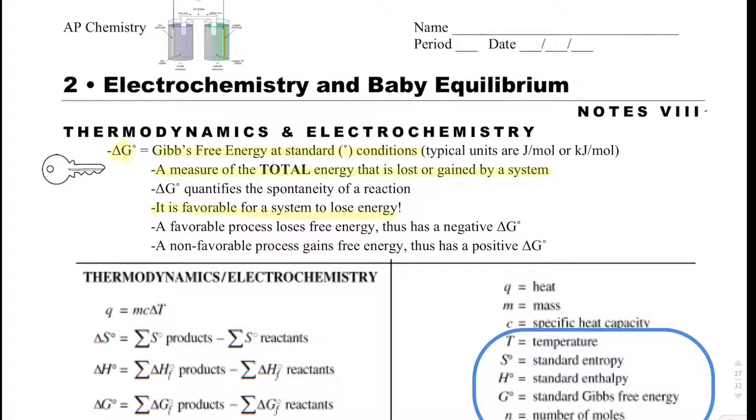You need to know that it's favorable to lose energy. Because it's favorable to lose energy, if we're losing, our energy should be negative, so that will be a negative delta G. If we gain energy, we'd have a positive delta G, which would be unfavorable.